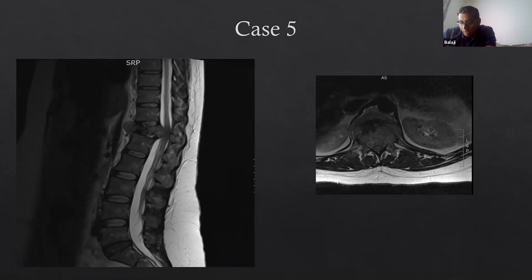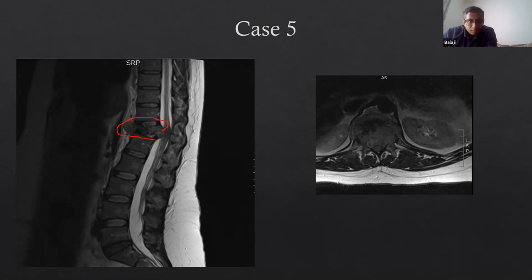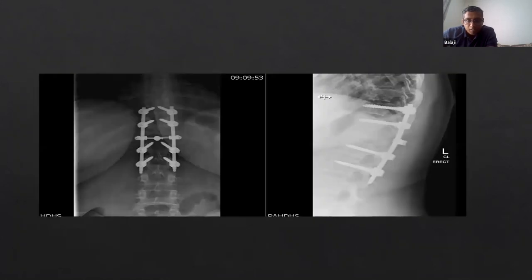Case five: a 35-year-old woman with pain in the thoracolumbar area for three months, initially dismissed as low back pain. However, her history of breast cancer treated four to five years ago was not picked up until a different GP reviewed her history. The MRI revealed metastasis causing T12 spinal cord compression. This case underlines the critical importance of a thorough history — a previous cancer history should always prompt investigation of thoracic pain.